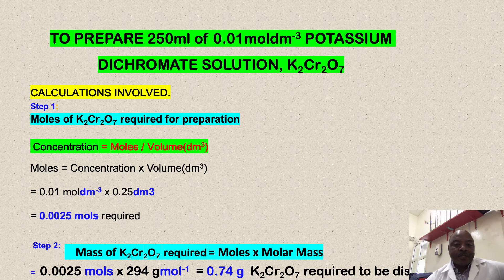If we substitute our values, we will have 0.01 mol/dm³ times 0.25 dm³. The dm³ will cancel out and we will be left with 0.0025 moles of potassium dichromate that is required for this preparation.